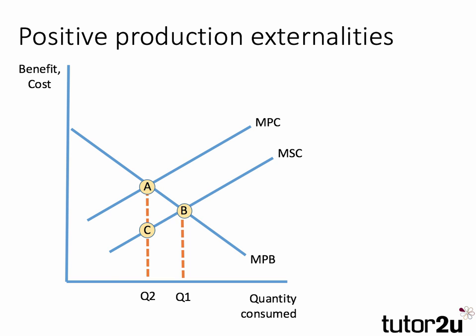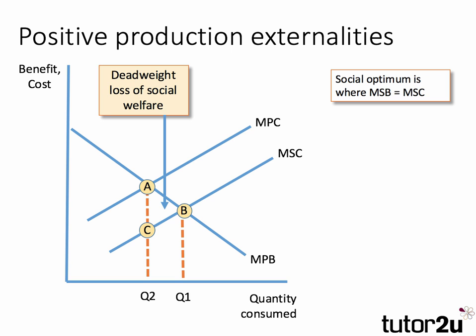Finally, in our four-way look at externalities: positive production externalities happen when the production of a good or service lowers a cost for another agent — a third party — such that the social cost curve lies below the private cost curve. The private optimum is at point A, where private benefit and private cost intersect. But there is a positive spillover of A, C which lowers costs for other firms. Ideally we'd want to be at a higher output B, where marginal social cost is taken into account, and underproduction leads to a deadweight loss of social welfare.